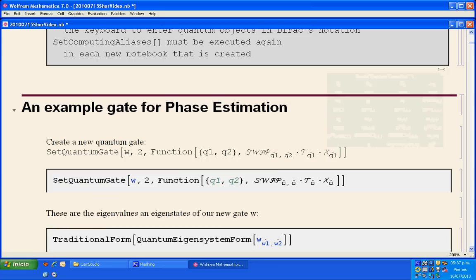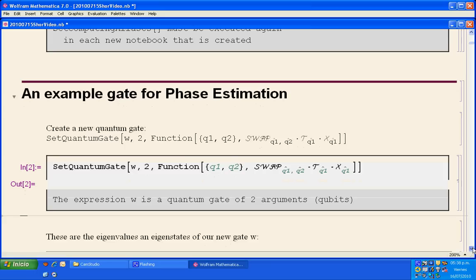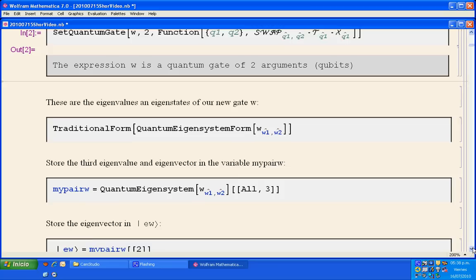I close the palette because I'm not going to use it anymore. Then I write that the swap is between qubits Q1 and Q2, the T gate is applied to qubit Q1 and the X gate to qubit Q1. I press Shift and Enter to evaluate, and I get that W is now a quantum gate of two arguments.